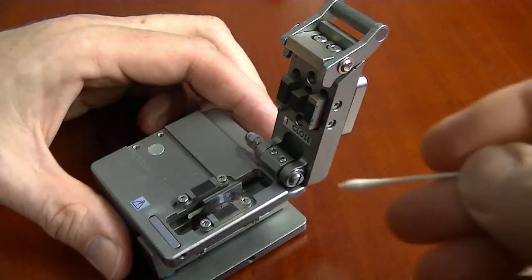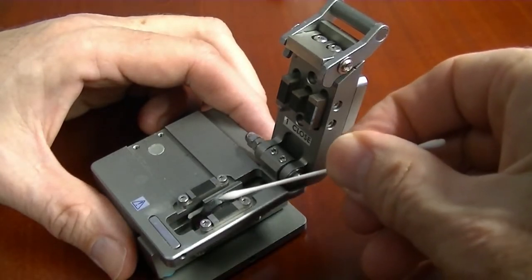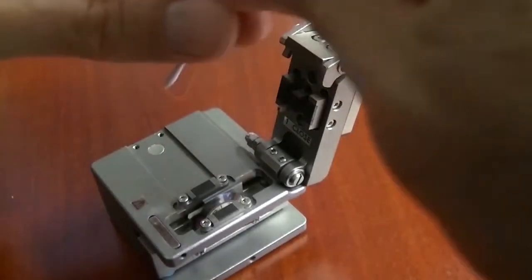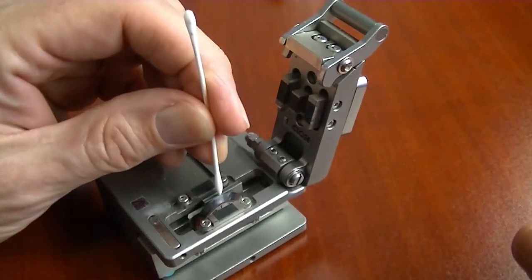Clean the cleaving wheel on the sides with a lint-free swab and 99% pure isopropyl alcohol. Do not touch the top of the blade.